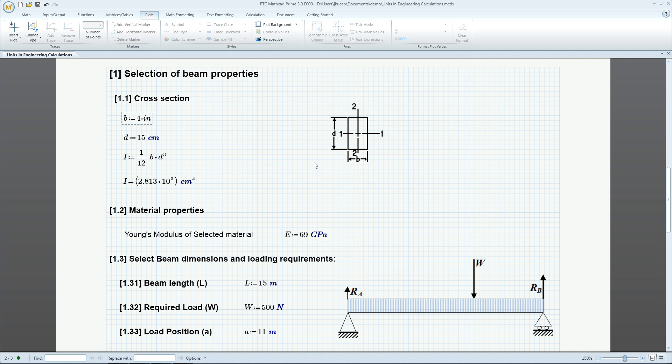Instead of centimeters, let's define the cross-section in inches. The moment of inertia is still in centimeters to the fourth power, but we can change it to inches.